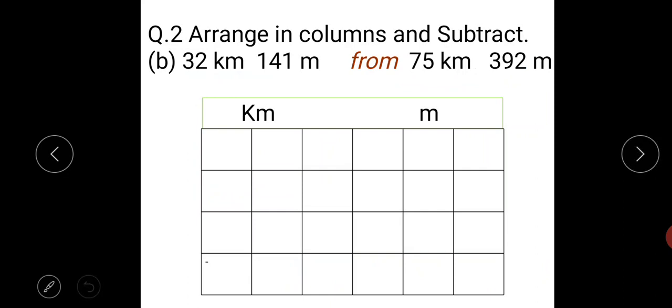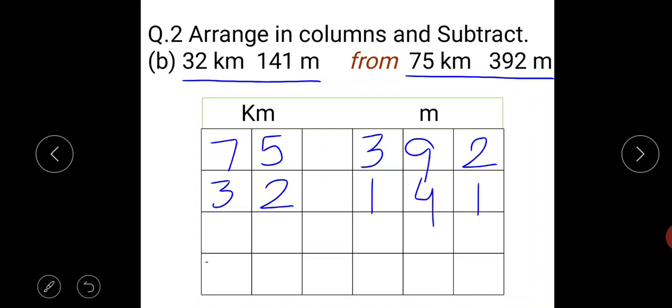Part B is, we have to subtract 32 kilometre, 141 metre from 75 kilometre, 392 metre. So first of all we write 75 kilometre, 392 metre. Then 32 kilometre, 141 metre.